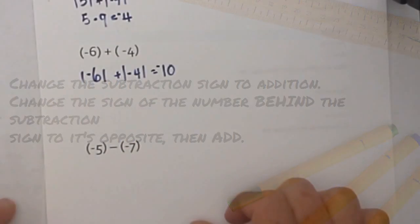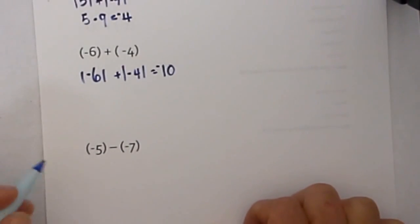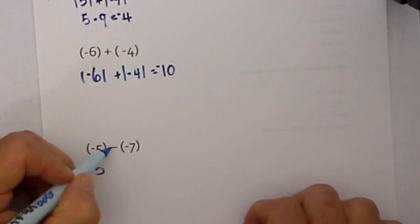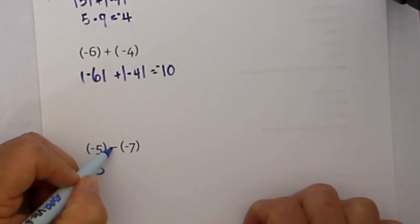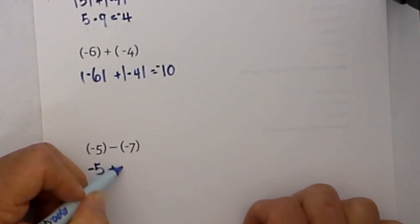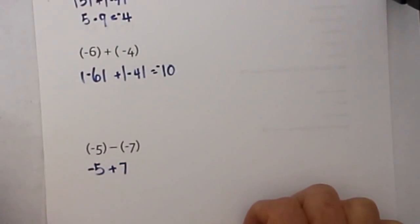Is the problem addition? No. So what we will do is change the sign. We will bring down the negative 5 and change the sign of subtraction to addition. And change the sign of the number directly behind it from negative 7 to positive 7.